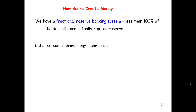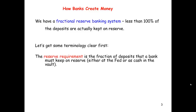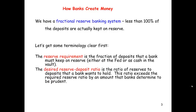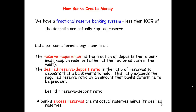So let's get some terminology clear. The reserve requirement is the fraction of deposits that a bank must keep on reserve, either at the Fed or as cash in the vault. The desired reserve deposit ratio is the ratio of reserves to deposits that a bank wants to hold — this ratio exceeds the required reserve ratio by an amount banks determine to be prudent, and we call this RD. A bank's excess reserves are its actual reserves minus its desired reserves.